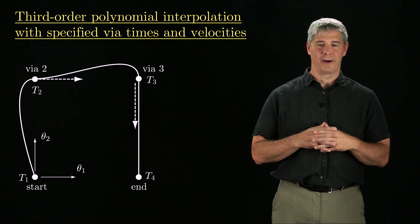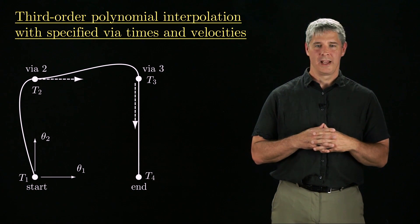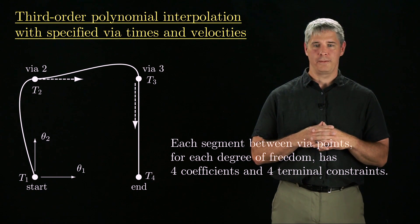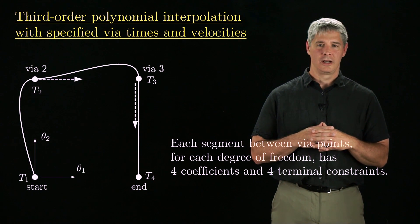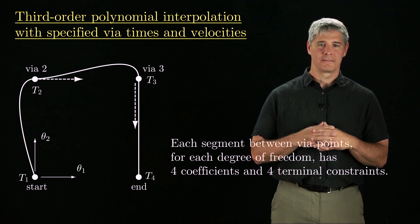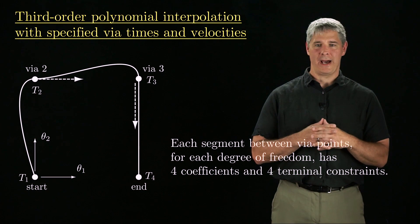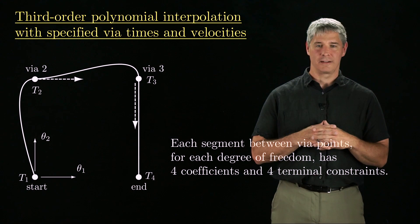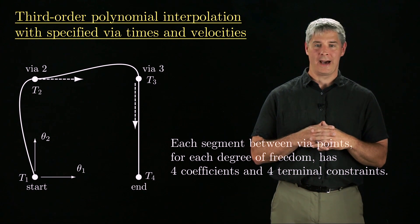The velocity is indicated by the dashed arrows. Each segment between via points, for each degree of freedom, has four coefficients and four terminal constraints, which allows us to solve exactly for the trajectories between via points. The tangent of the path has to be aligned with the specified velocity at each via point, so we can use the velocities at the via points to change the shape of the path.